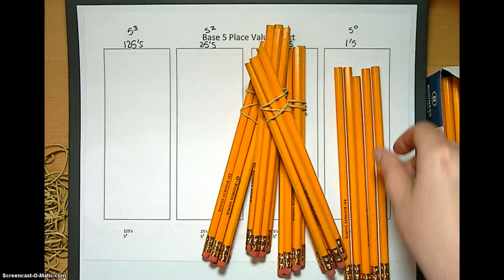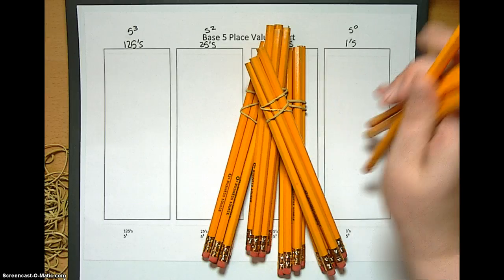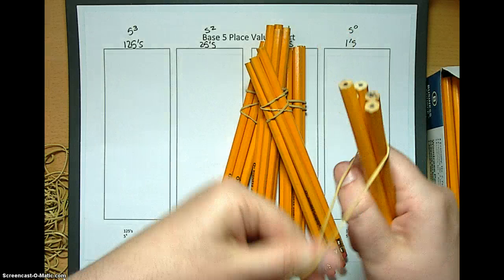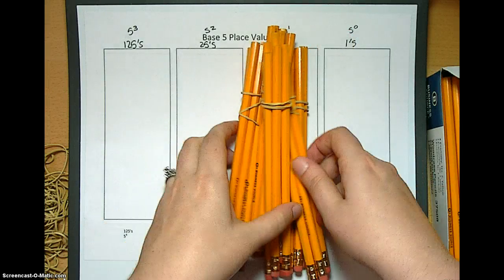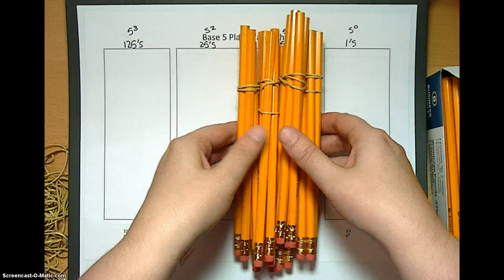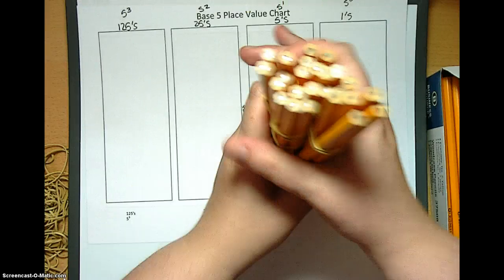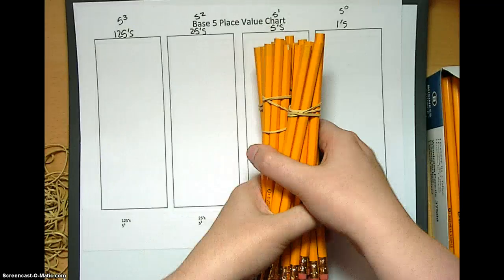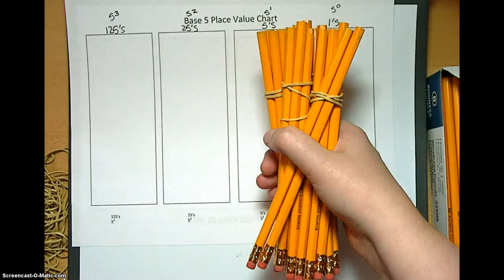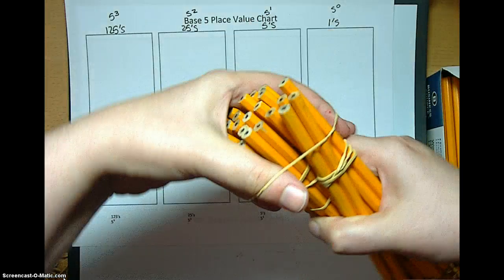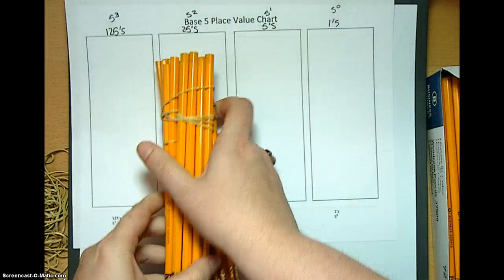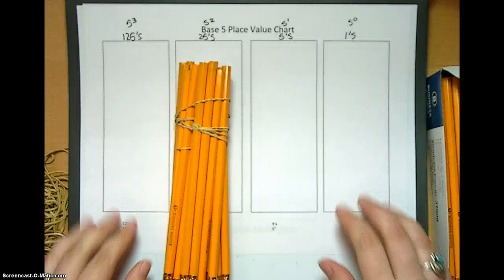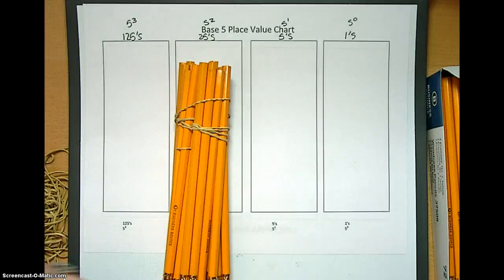And then the fifth one comes and we've got to bundle that because you've got to bundle anything that has 5 in it and move it over to the next place value. But now we have 5 bundles of 5. So with our 5 bundles of 5, we need to bundle that and move it over so that now we have 5 bundles of 5. So 5 to the second is our 25.